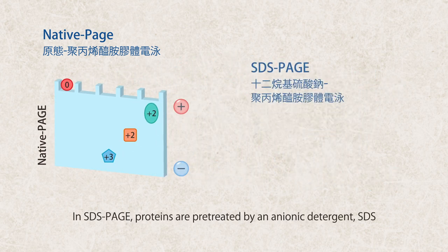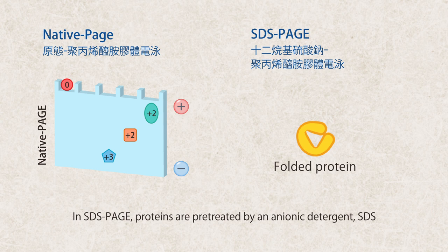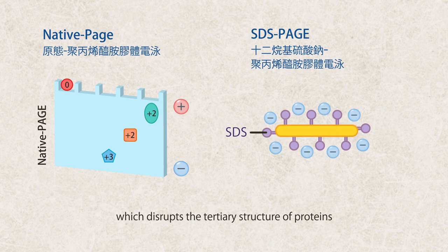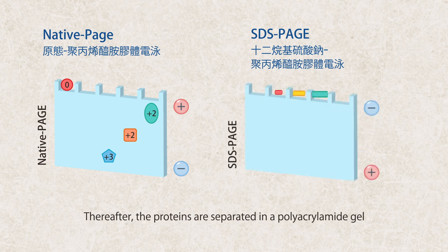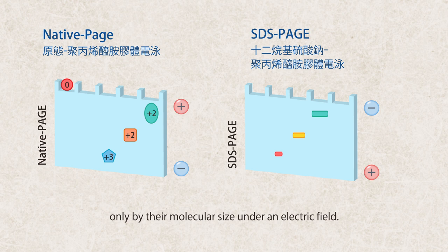In SDS-PAGE, proteins are pretreated by an anionic detergent, SDS, which disrupts the tertiary structure of proteins and gives proteins a uniform negative charge. Thereafter, the proteins are separated in a polyacrylamide gel only by their molecular size under an electric field.